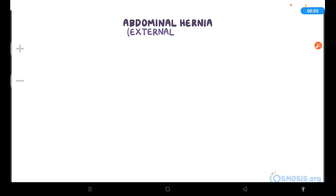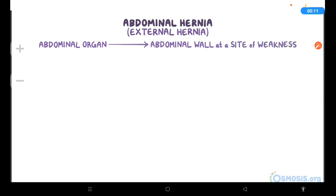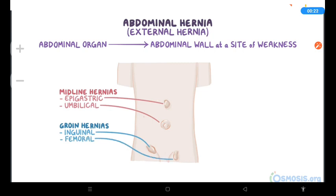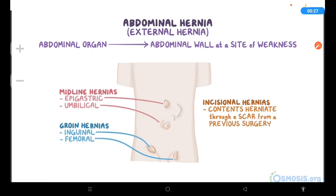Abdominal hernias, also called external hernias, are when an abdominal organ, or part of an abdominal organ, protrudes through the abdominal wall, usually at a site of weakness. They can be classified into midline hernias and groin hernias. Most frequent types of midline hernias are the epigastric and umbilical hernias, while groin hernias can further be classified into inguinal and femoral hernias. There are also incisional hernias, which occur when contents herniate through an incisional scar from a previous abdominal surgery.